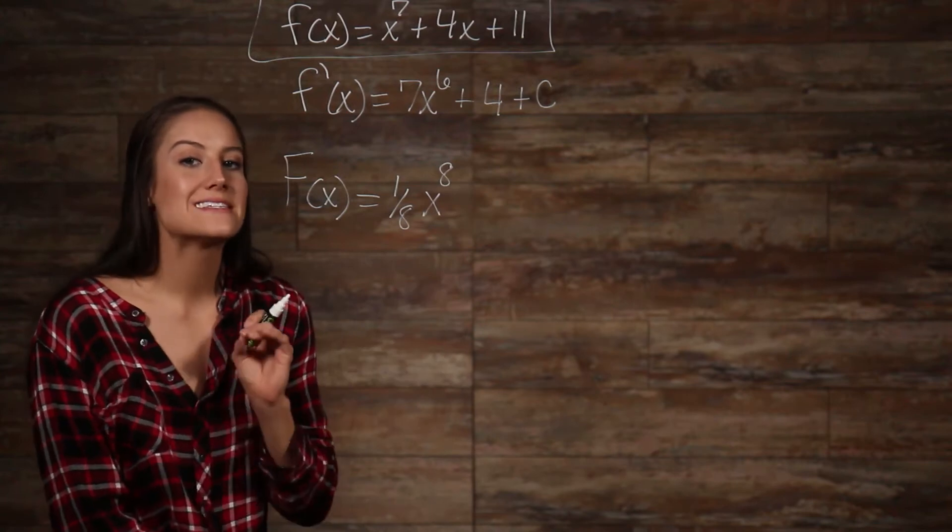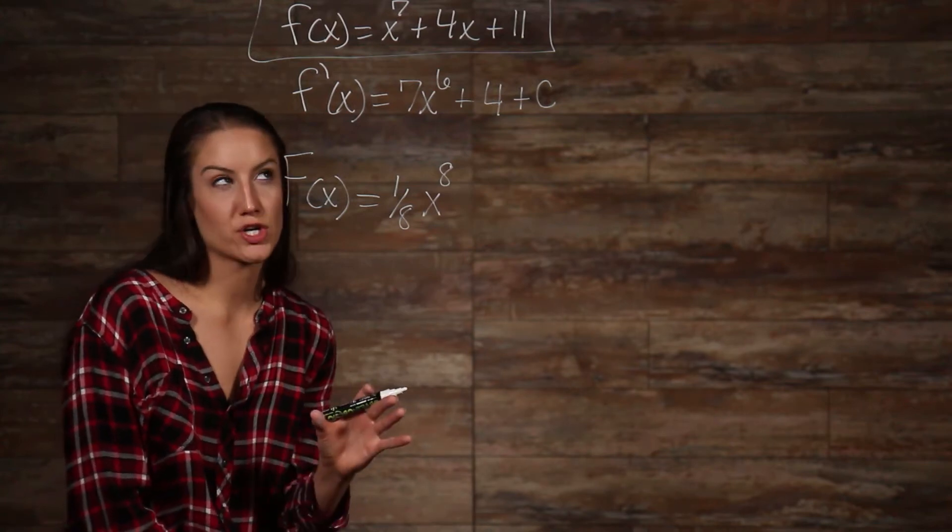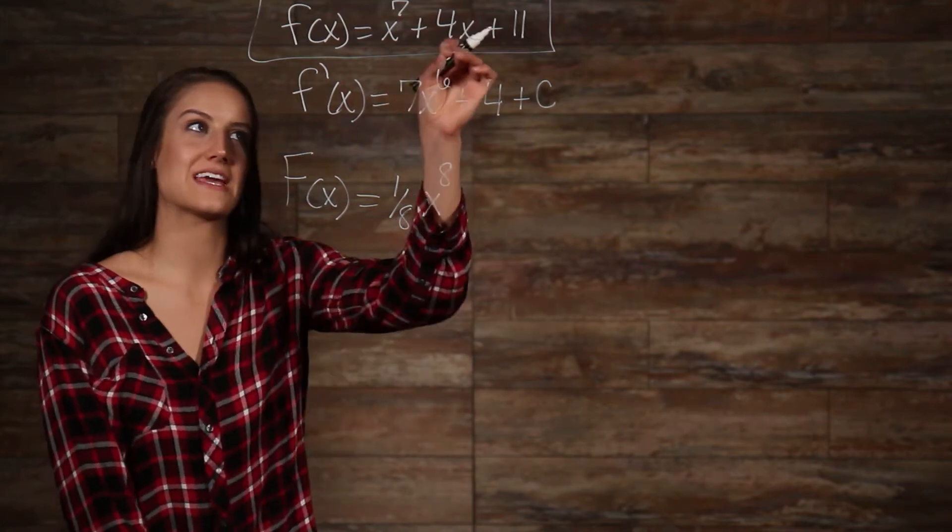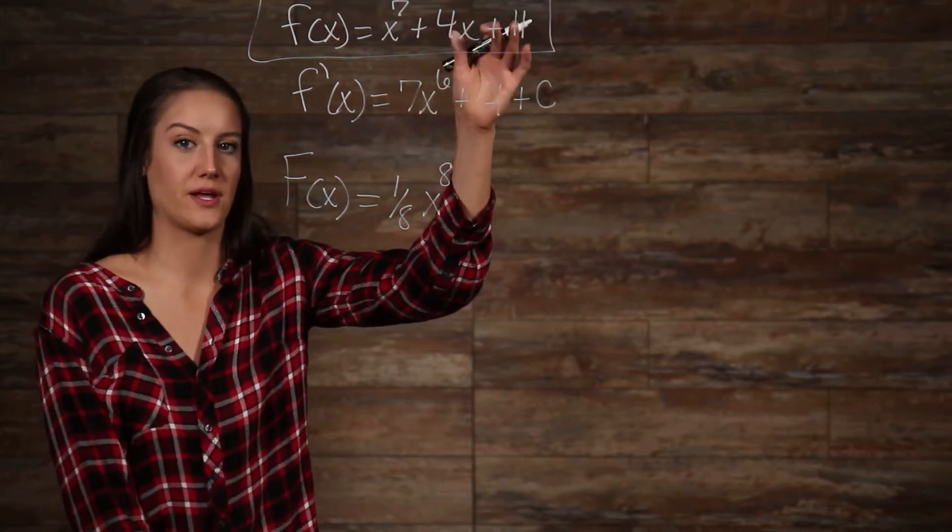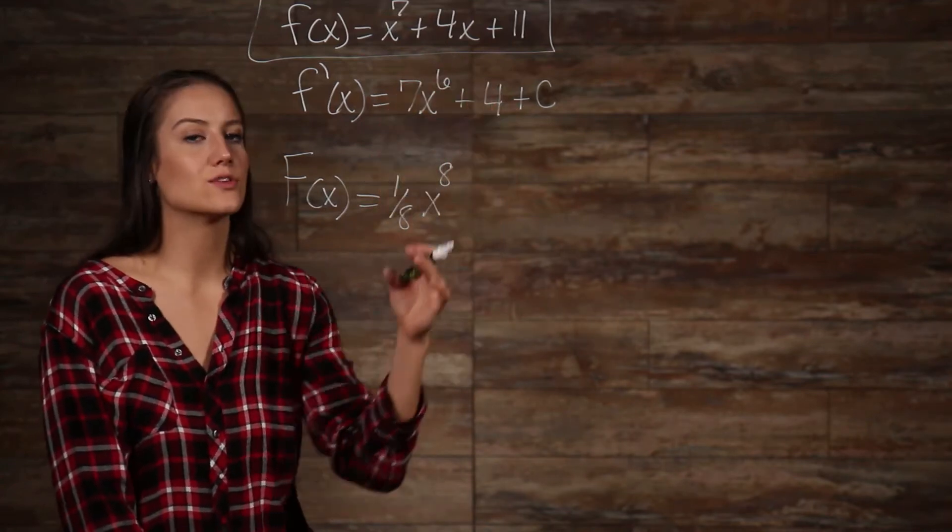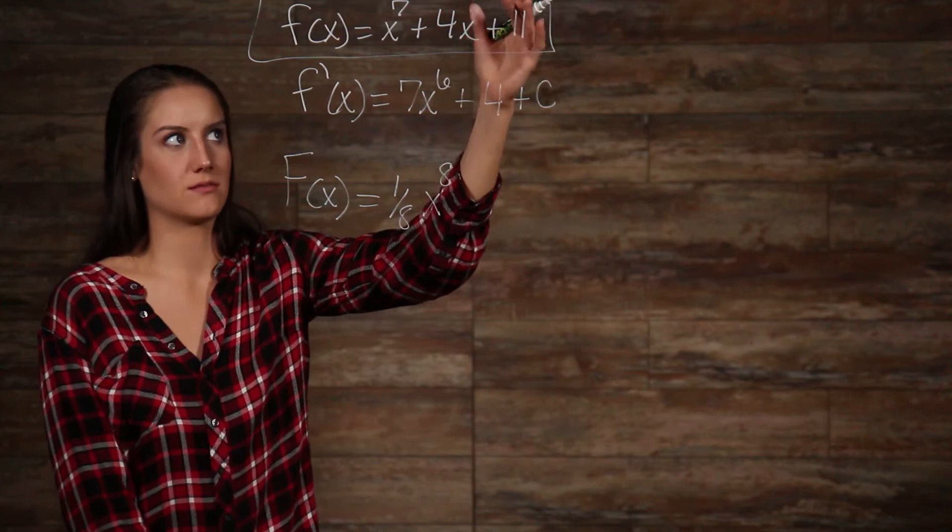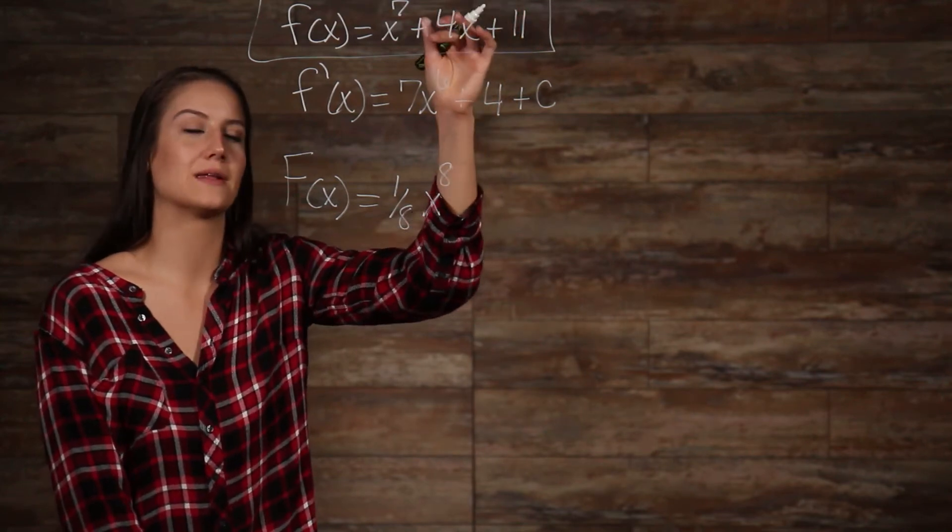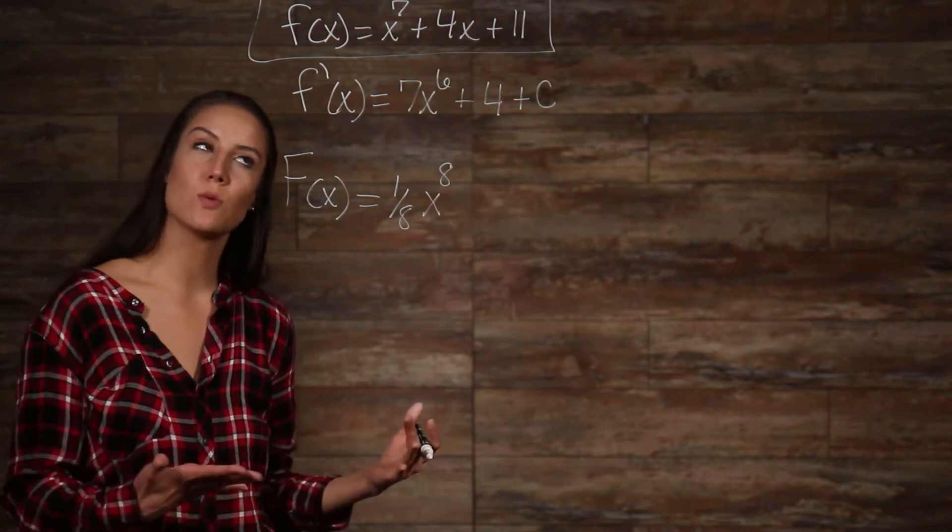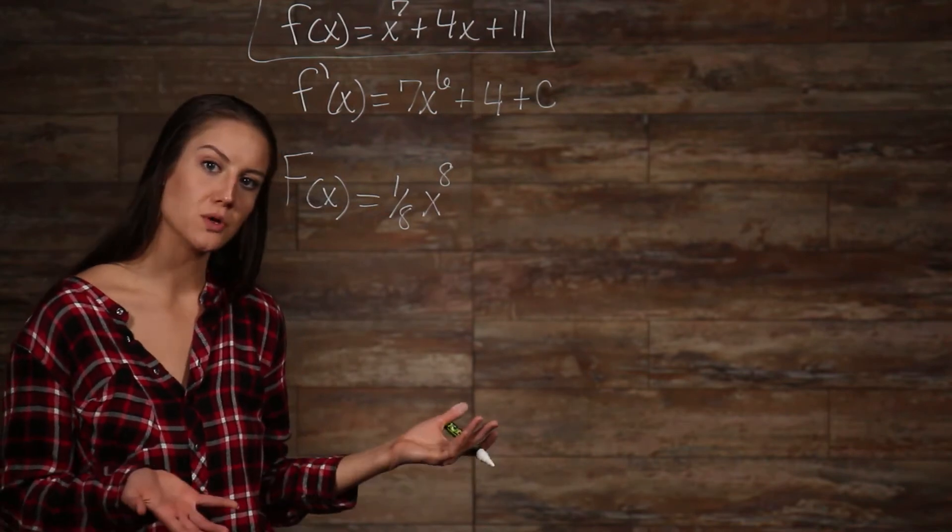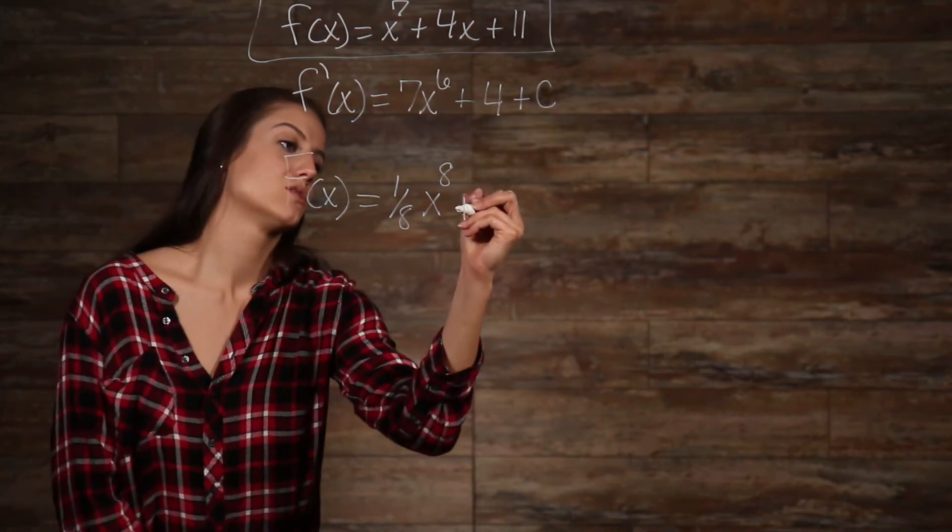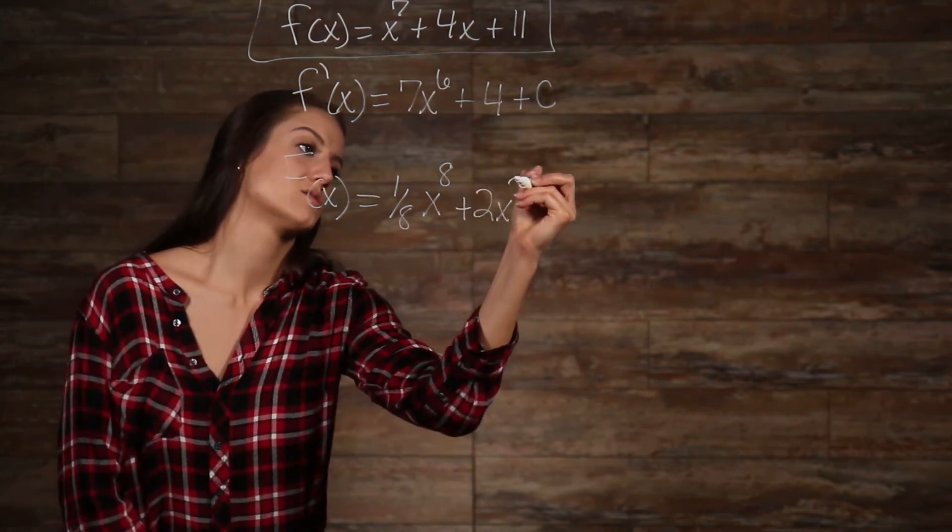Well, we do the same thing to each of our other two terms. So, let's take a look at our 4x here. Again, one was taken away from our exponent. So, we need to add that one back, which gives us x squared. Now, the two in our exponent that we now know that we have was brought down and multiplied, and whatever it was multiplied by gave us four. So, two times what is four? Two. Which makes our original term before the derivative was taken 2x squared.